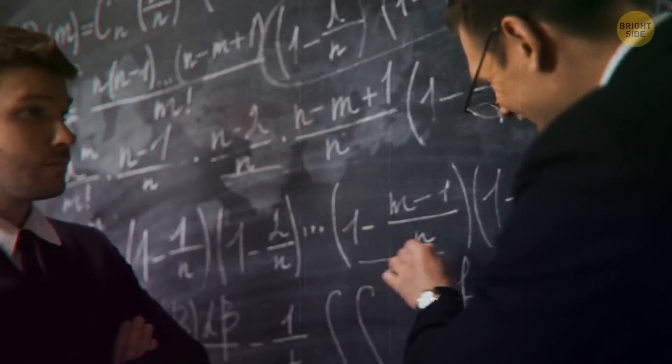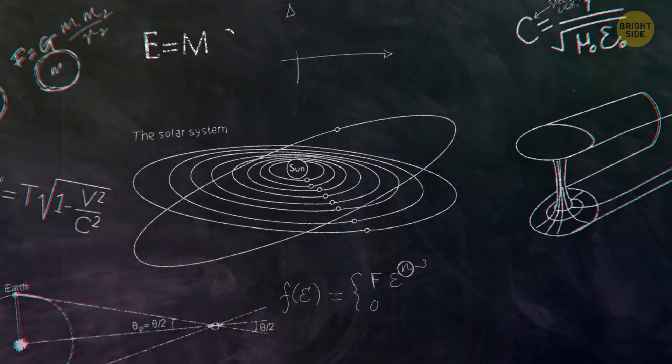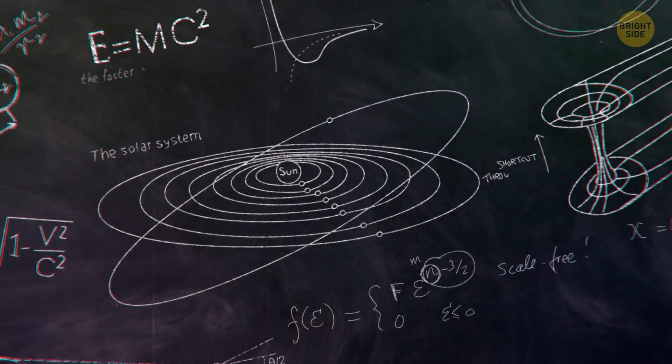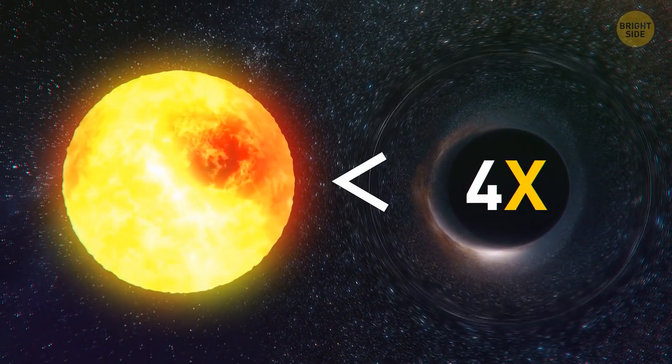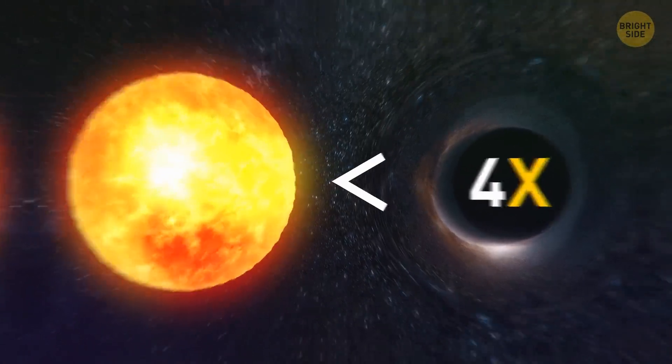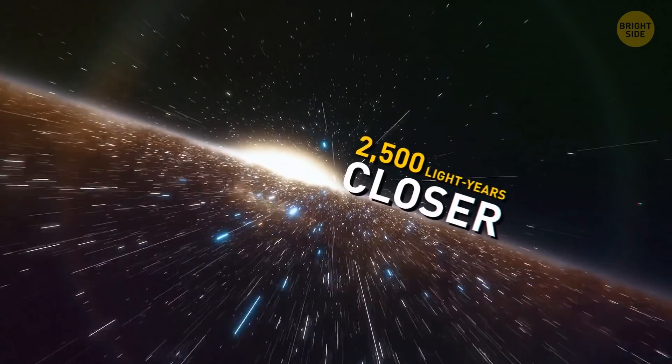Scientists have been studying this system since the 80s, but this winter, it revealed its main secret. This particular black hole is considered relatively small. But despite this, its mass is four times bigger than our Sun, and it's 2,500 light-years closer to Earth than the next nearest black hole.